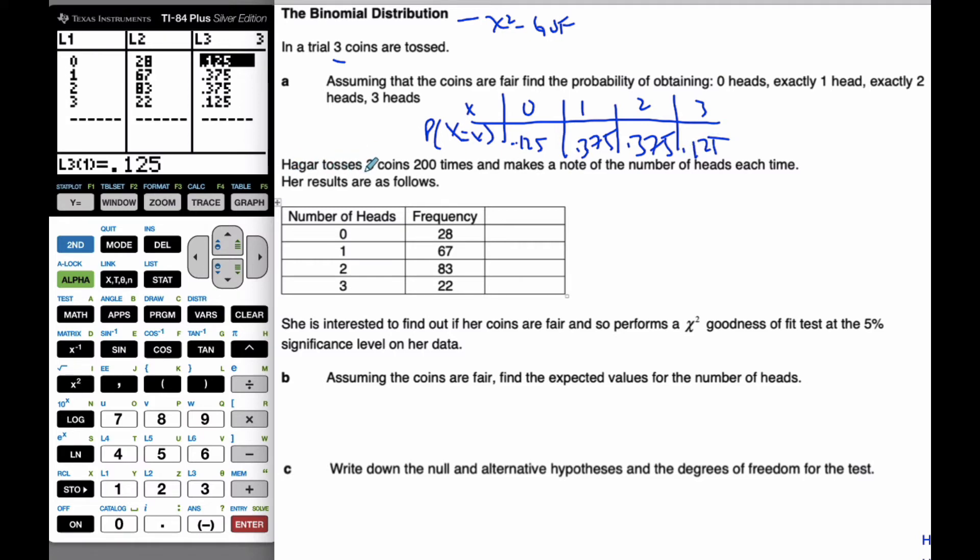Okay, so Hagar tosses three coins 200 times. Here are all the frequencies and makes note of the number of heads each time. She's interested to find out if her coins are fair, and so she performs a chi-square goodness of fit test at 5% level.